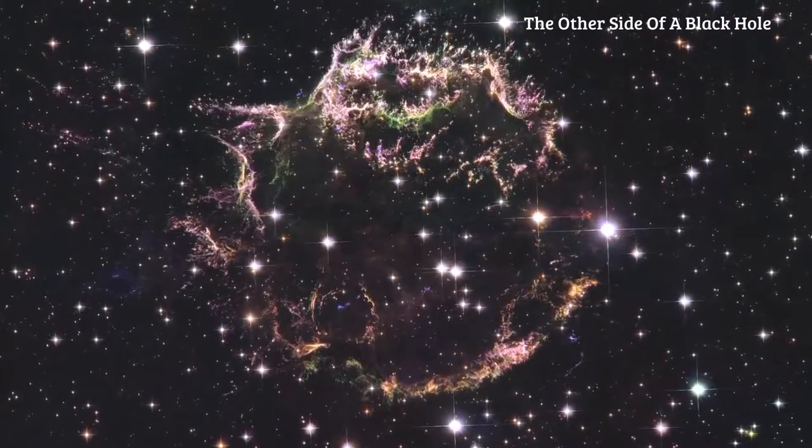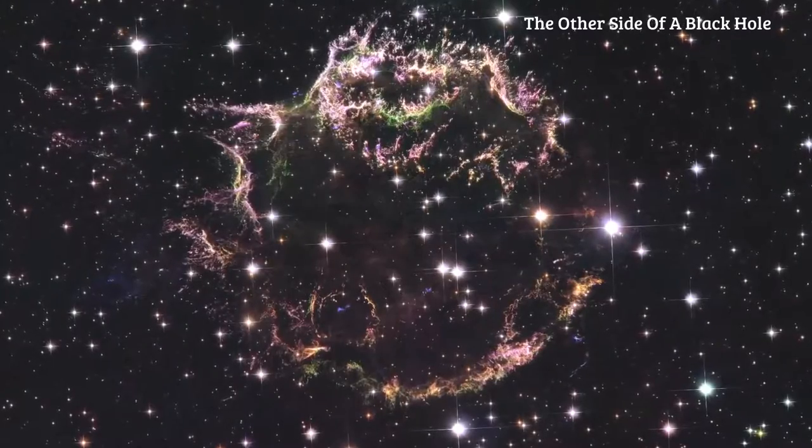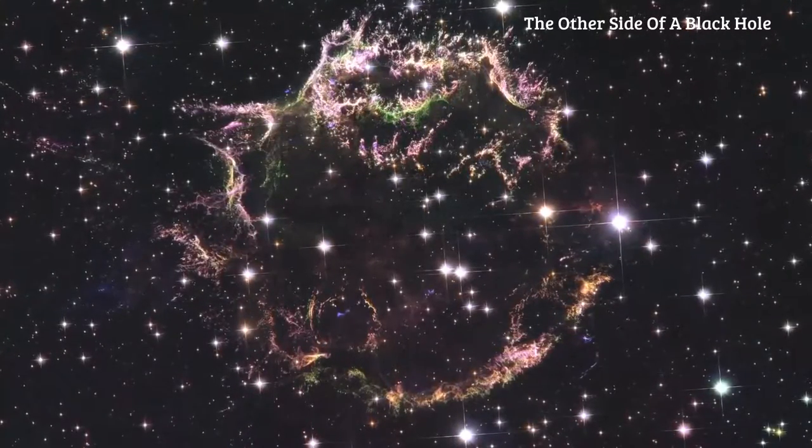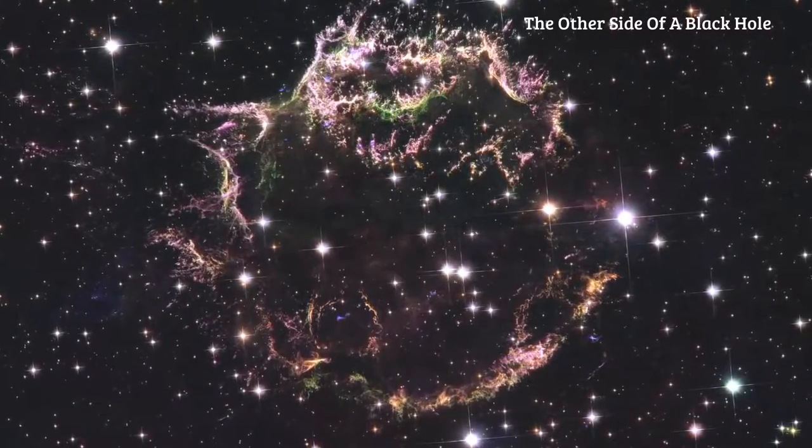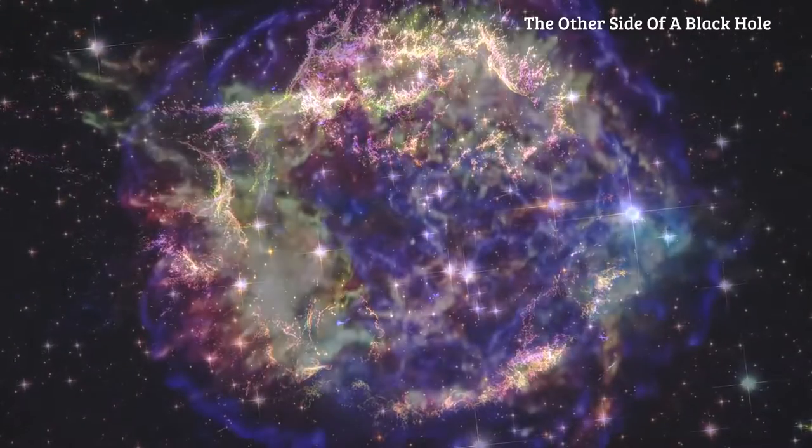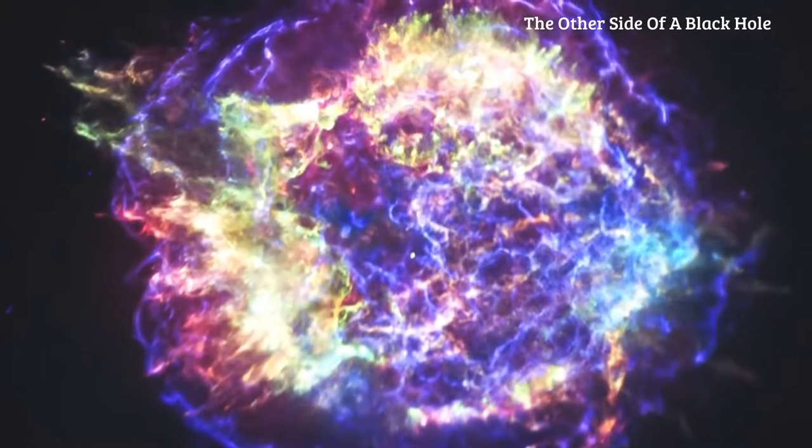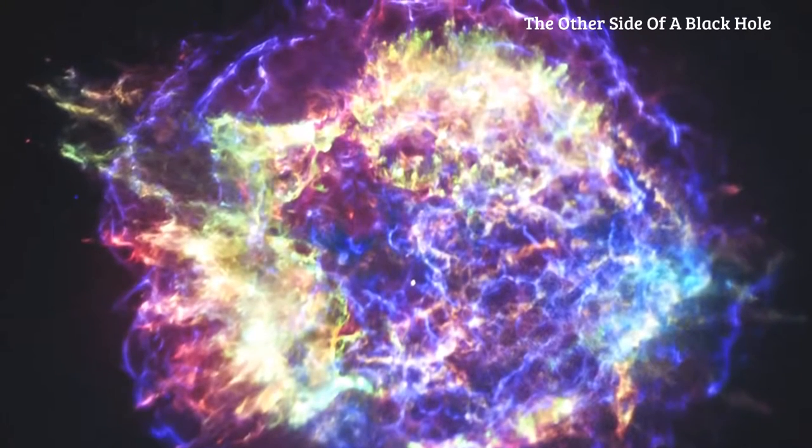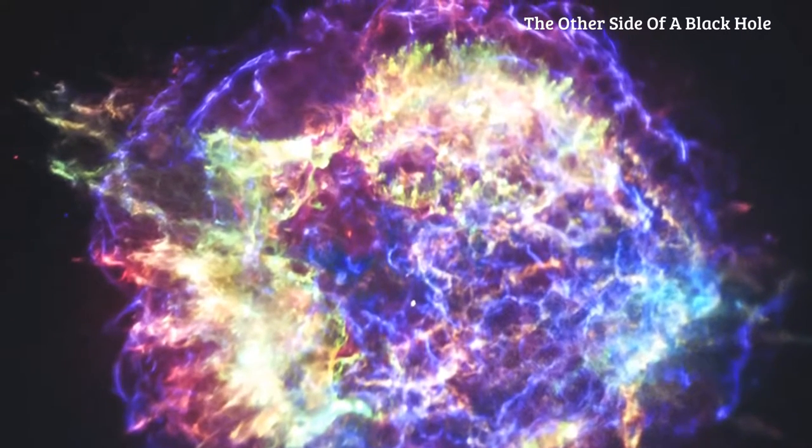Here is a Hubble Space Telescope image of Cassiopeia A. It shows the visible remnant of a supernova, glowing at about ten or twenty thousand degrees Celsius. Here is an image from the Chandra X-ray Observatory, showing gas heated to tens of millions of degrees.